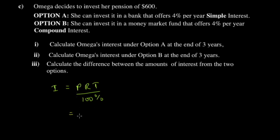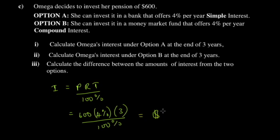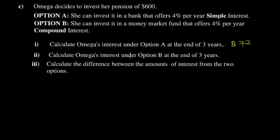So the principal is 600, the rate is four percent, and the time is three years, divided by 100%. The percentages cancel, so you have 600 × 4 × 3 ÷ 100 = 72. Under option A, this person gets $72. We used the simple interest formula — principal times rate times time over 100% — where time is in years, principal in dollars, and rate is given as a percentage.